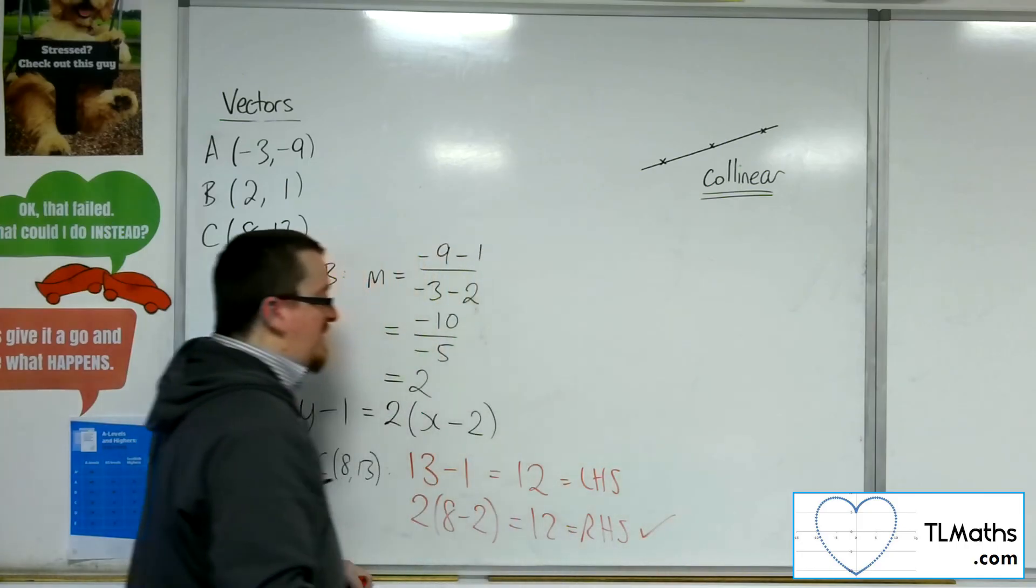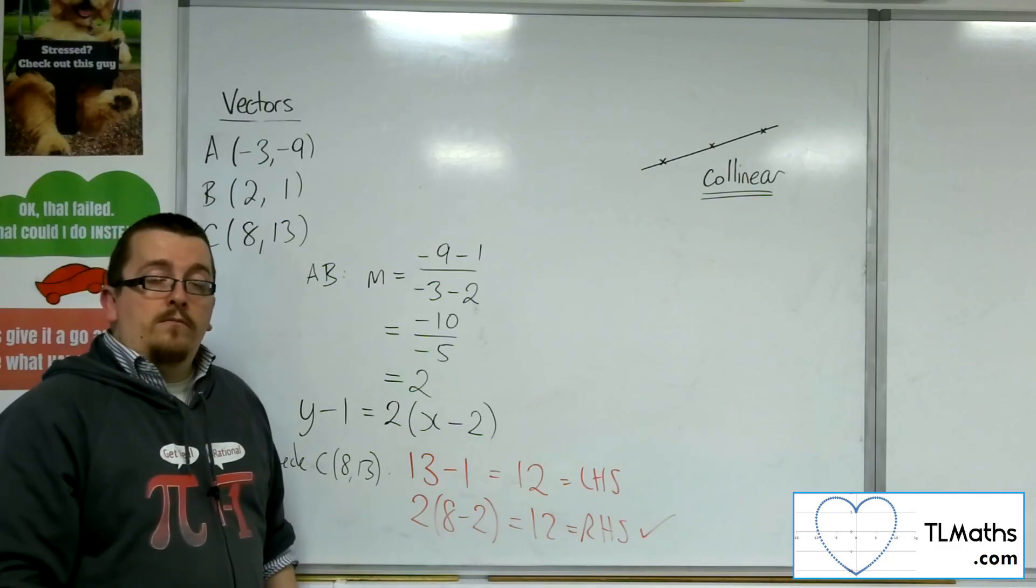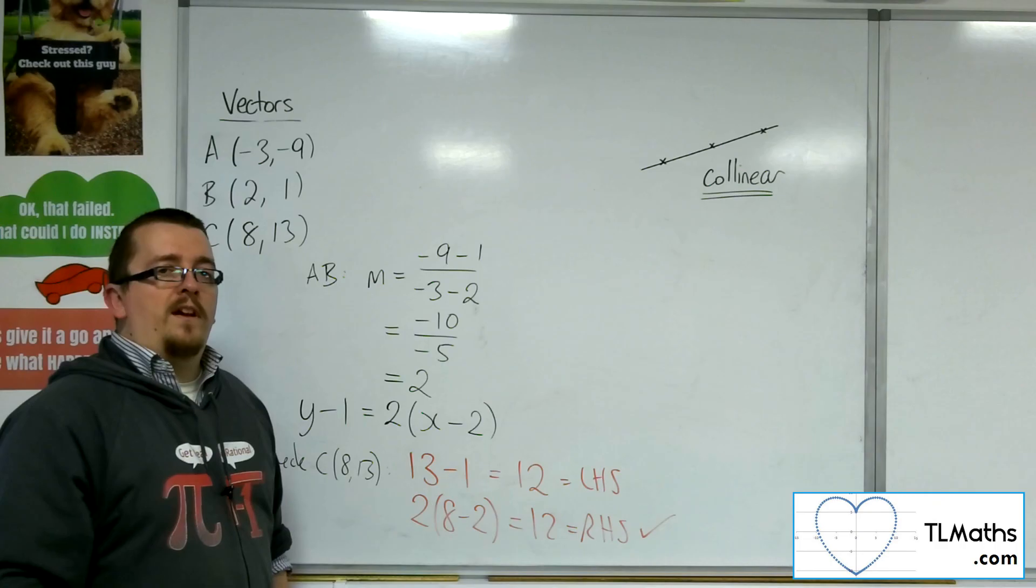Since the left-hand side equals the right-hand side, C must lie on the line. So all three points lie on the same line, and they are collinear.